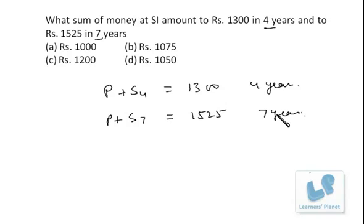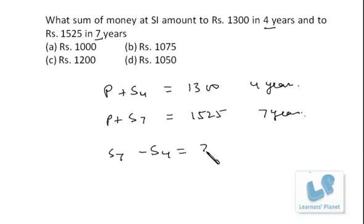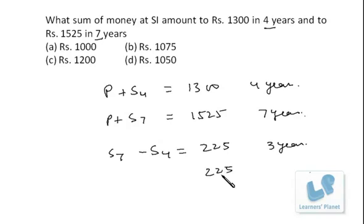Since interest for individual years is the same, if I deduct the four-year amount from the seven-year amount, I get the interest for three years. Simple interest for seven years minus simple interest for four years equals 1525 minus 1300, that is 225. This is the simple interest for three years. Since simple interest is the same every year, each year the simple interest was rupees 75.